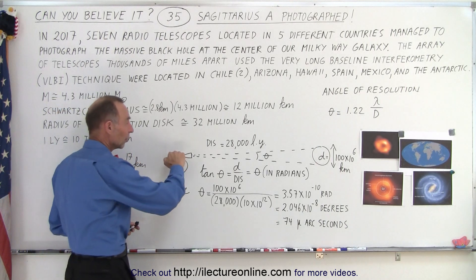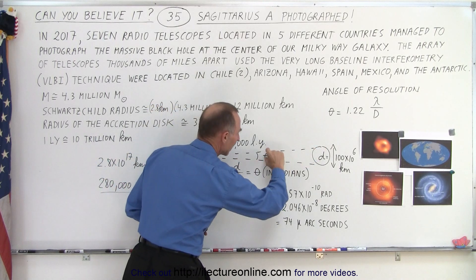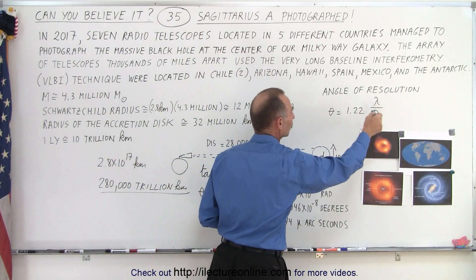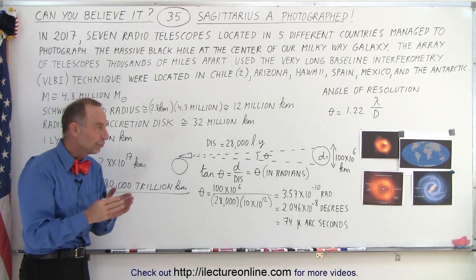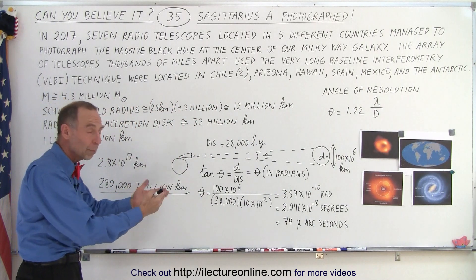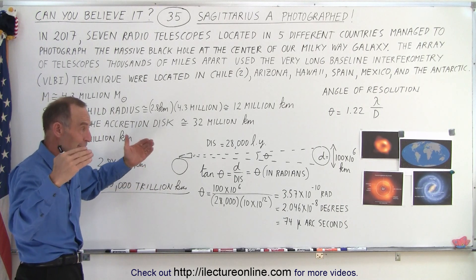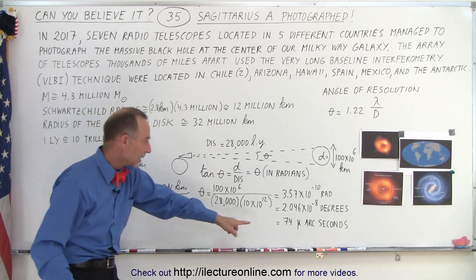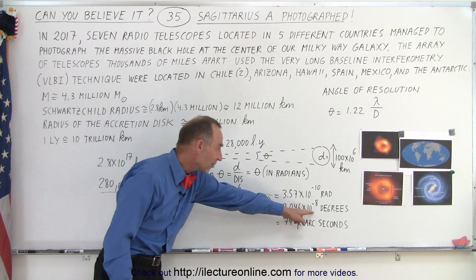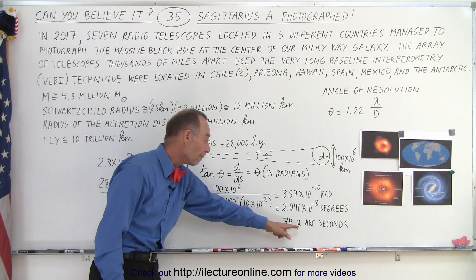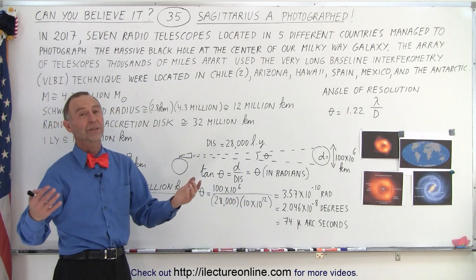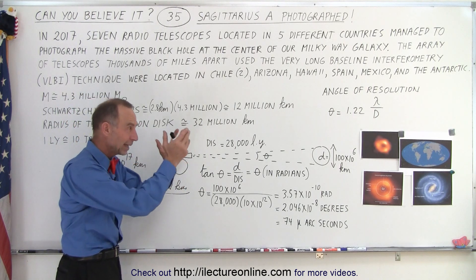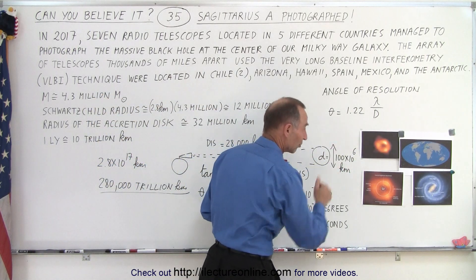So how big is that object relative to us? We can calculate what we call the angle of resolution: 1.22 times the wavelength we're observing, divided by the diameter of the array. A normal telescope is simply not big enough to resolve something that small and that far away. I calculated an angle of 2 times 10 to the minus 8 degrees, or 74 micro arc seconds. It is so tiny that a typical telescope has no chance of seeing it. So how did they manage to record and give us a picture of that black hole?